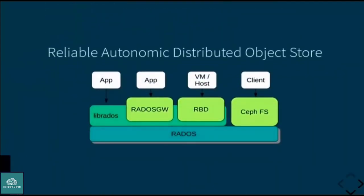At the heart of the Ceph system is RADOS — Reliable Autonomic Distributed Object Store — which all these interfaces are based on. It's a general storage system where all other components are built on. You can use it directly with the RADOS interface or library, and you have services like RADOS Gateway providing S3 and Swift interfaces. You have block devices you can mount and use, as well as CephFS — the native file system for Ceph. There are also other gateways like NFS gateway and iSCSI gateway.